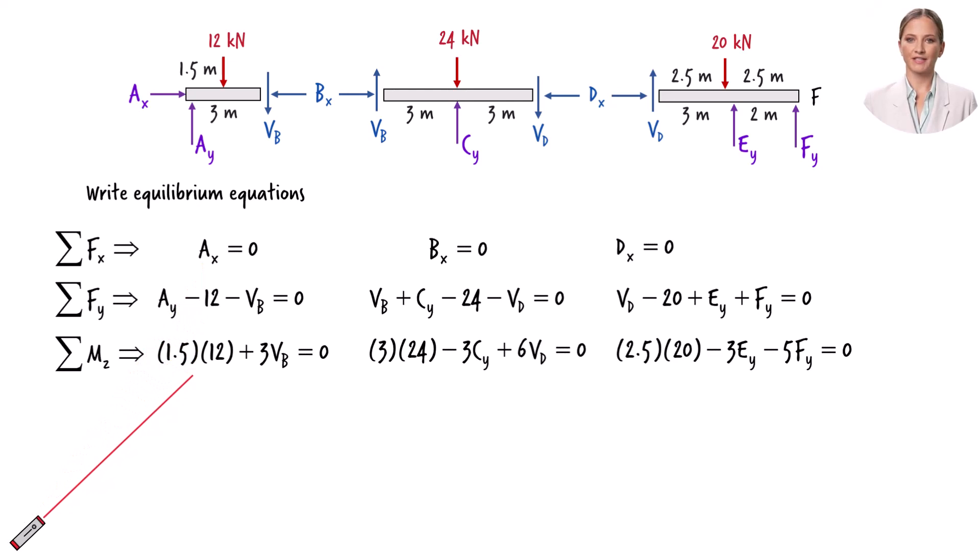Since this equation contains one variable only, we can use it to determine Vb. And if we substitute negative six for Vb in this equation, we can solve for Ay.